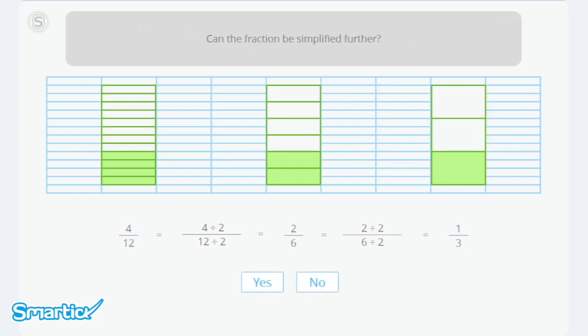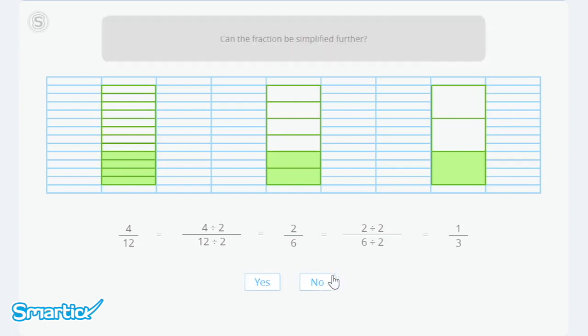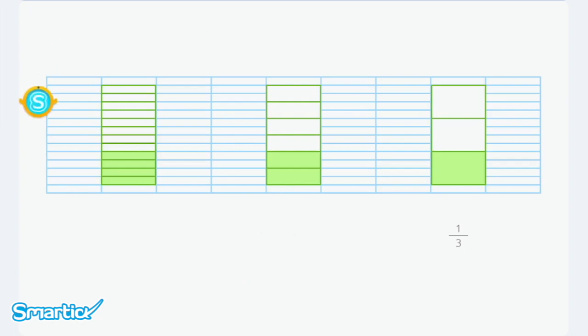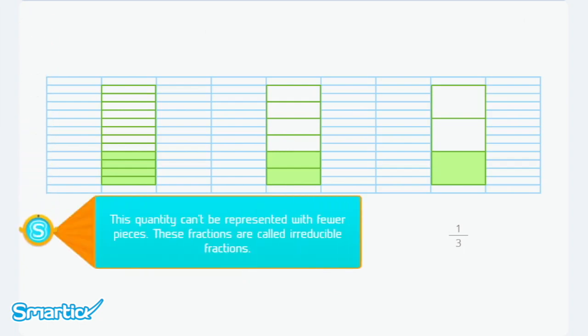Can the fraction be simplified further? No. There are no numbers we can use to divide the numerator and the denominator. The fractions that can't be simplified — the ones that can't be expressed using a smaller number of pieces — are called irreducible fractions.